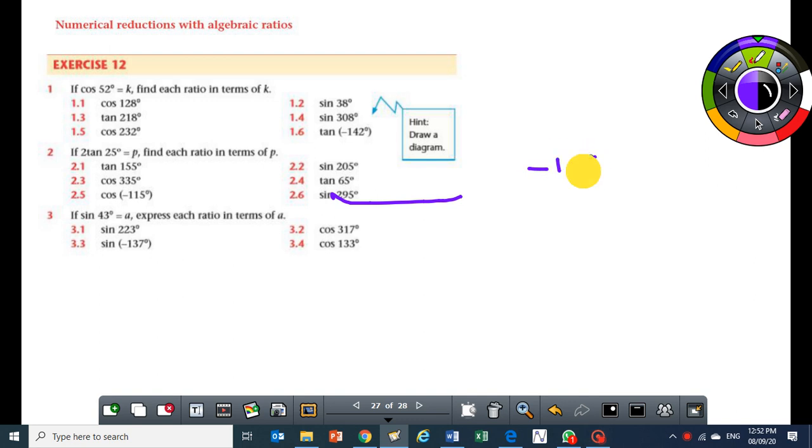All ratios of sine and cosine lie between minus 1 and 1. So you will never get a ratio for sine or cosine which is less than minus 1 or greater than 1.